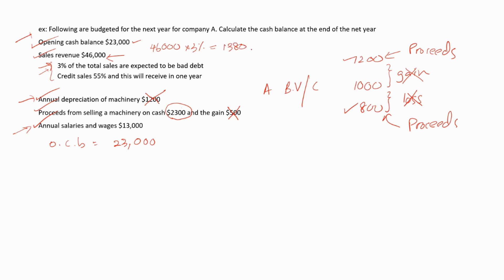Now we calculate the sales revenue that will be earned by the company after the bad debt, which is equal to $46,000 minus the bad debt amount of $1,380. This is equal to $44,620. As we discussed earlier, we do not consider the bad debt under cash budget.